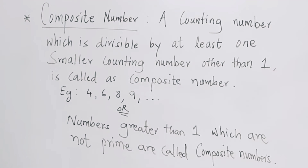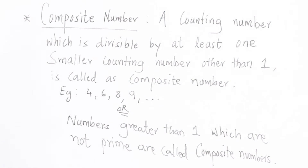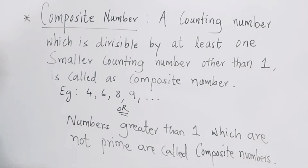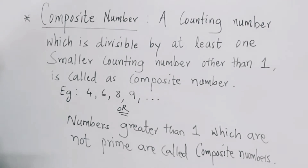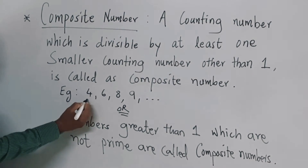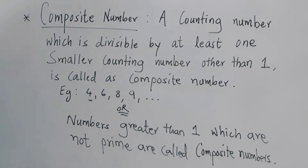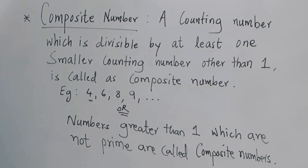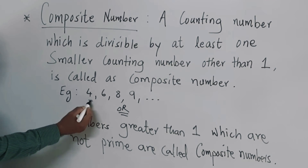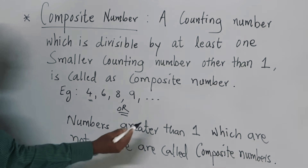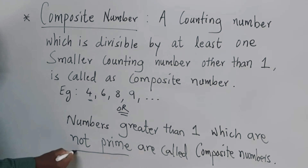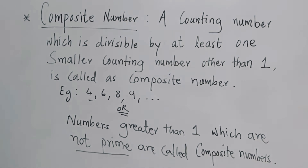What are composite numbers? A counting number which is divisible by at least one smaller counting number other than 1 is called a composite number. Note that 1 is not a composite number. For example, 4 has the smaller factor 2 (2×2=4), and 6 can be divided by 2 or 3. So examples of composite numbers are 4, 6, 8, 9, and so on. Alternatively, numbers greater than 1 which are not prime are called composite numbers.